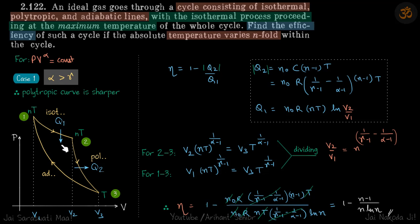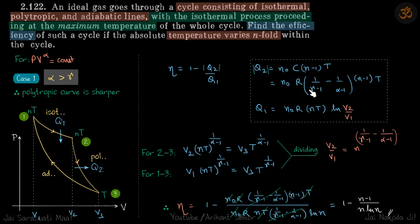The adiabatic process has no heat gained or lost. So q1 is the heat for the isothermal process and q2 is the heat for the polytropic process. Efficiency is 1 minus q2 by q1. For the isothermal process, heat is nRT ln(v2/v1). For the polytropic process, heat is n·C·ΔT, where ΔT is (nT minus T), and C for a polytropic process is R times (1/(γ-1) minus 1/(α-1)).